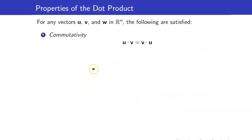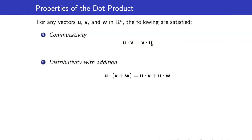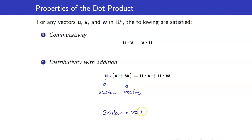Here are the properties of the dot product. First, the dot product is commutative — the order does not matter, so u dot v is the same as v dot u. Next, it is distributive with respect to vector addition. Remember that this is not scalar multiplication, this is your dot product, because u is a vector and v plus w is a vector. The answer to a vector dot another vector is a scalar, whereas the answer to a scalar times a vector is another vector.